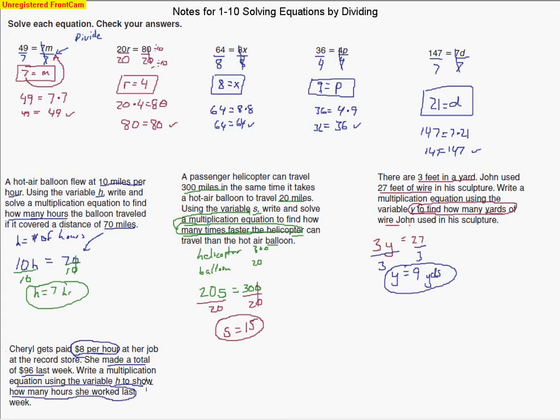Let's write our equation. 8 times the number of hours equals the total amount made, $96. From that point, I'm going to divide by 8 on both sides, and we'll have our answer. H equals 12. So 12 hours is the number of hours that Cheryl ended up working.